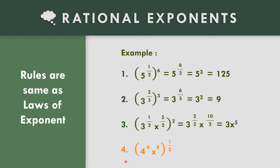In example number four: the quantity four to the six x to the eighth, raised to one-half. Copy the base four: six times one-half is six over two, and six divided by two equals three, so four cubed is four times four times four, which equals 64. Copy the base x: eight times one-half is eight over two, and eight divided by two equals four, giving x to the fourth power. The final answer is 64 x to the fourth power.